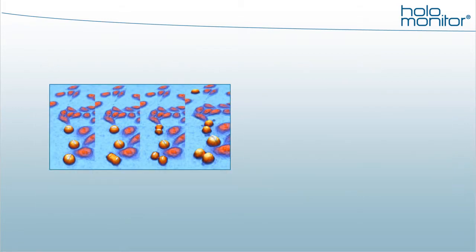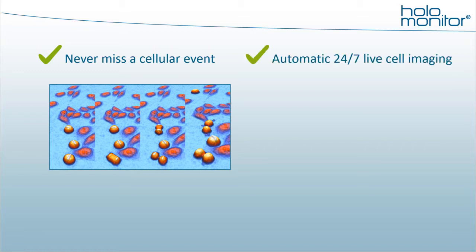One of my personal perks using Holomonitor is its ability to image in real time, over time, inside the incubator. It's like 24-7 live cell TV. I never miss a cellular event that I'm interested in, such as following cells through the cell cycle. This image sequence lets us witness cells undergoing cell division. Regardless of how long your experiment may be, Holomonitor will image and measure your cells for just a few hours, a few days, or even weeks if needed.